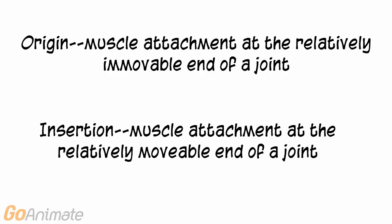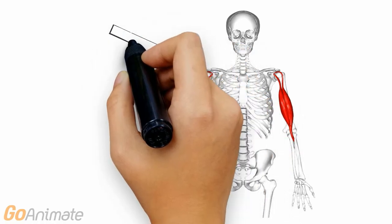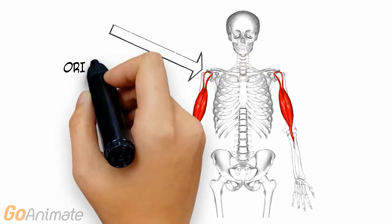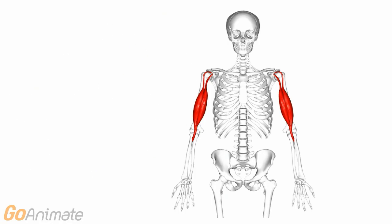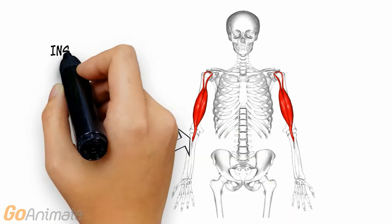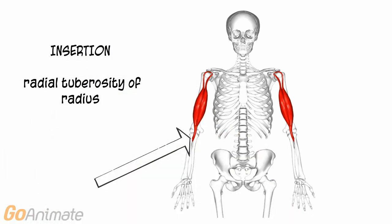The origin of a muscle is where it attaches to the relatively immovable end of a joint. The insertion is where the muscle attaches to the more movable end of a joint. For example, the origin of the biceps muscle consists of two attachments. The long head of the biceps attaches to the supraglenoid tubercle of the scapula. The short head attaches to the coracoid process of the scapula. The insertion of the biceps is at the radial tuberosity of the radius.